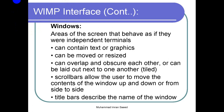Windows are areas of the screen that behave as if they were independent terminals. For example, in Windows I can open one window and copy files, open another window to start downloading something, and open a third window to check my email. All three windows behave like three independent terminals working simultaneously. This was the concept of windows — they behave like independent terminals, and a window can contain text or graphics.